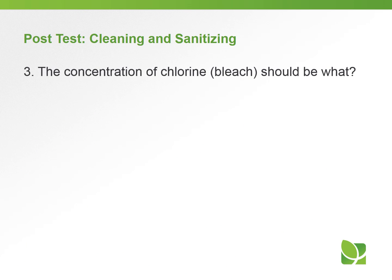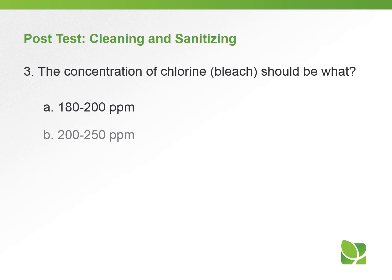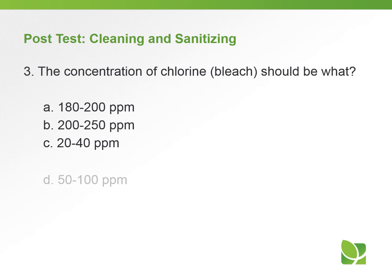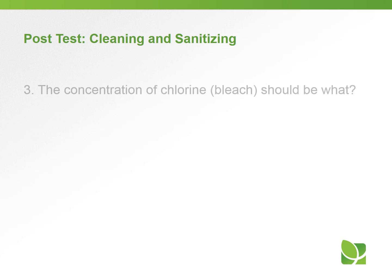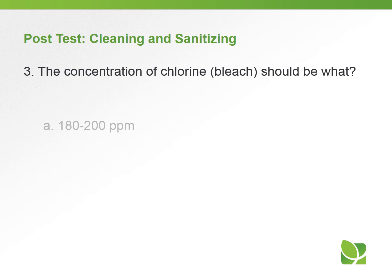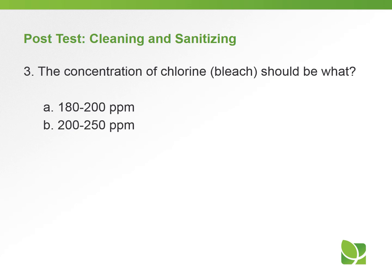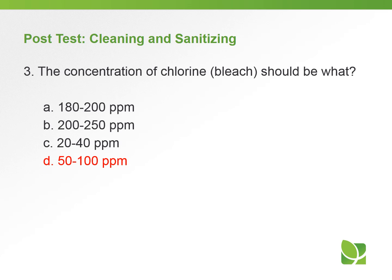Question three: the concentration of chlorine or bleach should be — a) 180 to 200 parts per million, b) 200 to 250 parts per million, c) 20 to 40 parts per million, or d) 50 to 100 parts per million. The answer is d) 50 to 100 parts per million. Remember, 180 to 200 parts per million is for quaternary ammonium (quats).